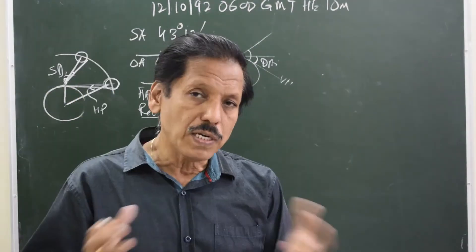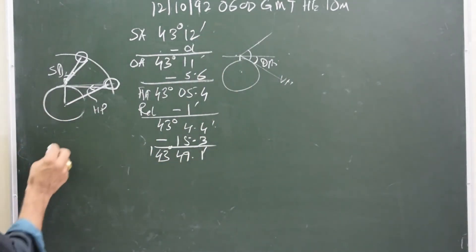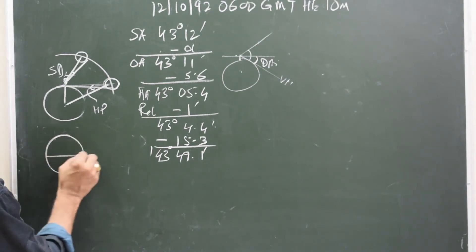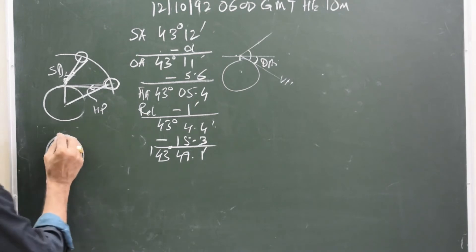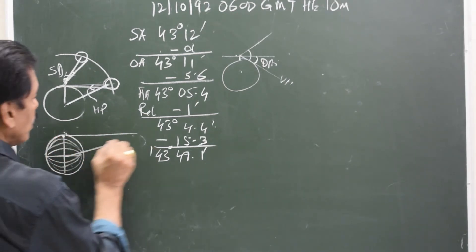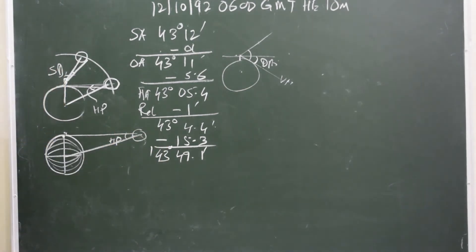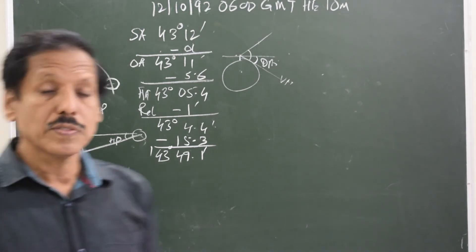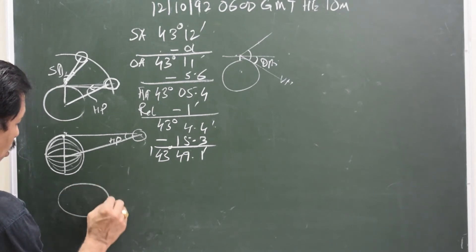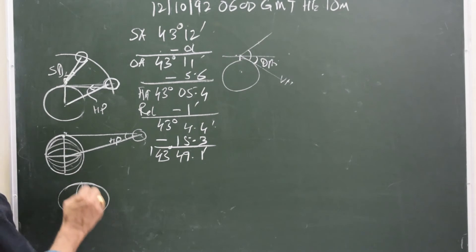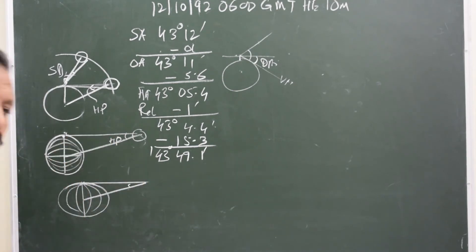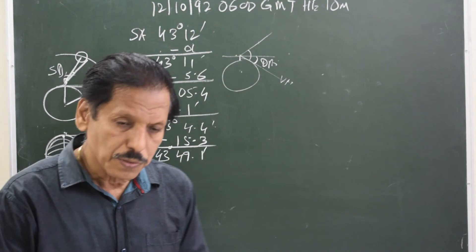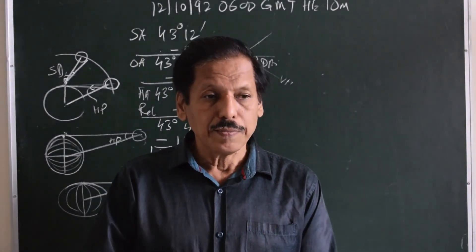The horizontal parallax given in the nautical almanac for every GMT hour is for an observer at the equator. But I may not be taking observations from the equator — I might be taking observation from the pole. In that case, the horizontal parallax angle is smaller than what is given in the almanac. If taking observations from some intermediate latitude, the horizontal parallax would be less than the HP given in the nautical almanac.